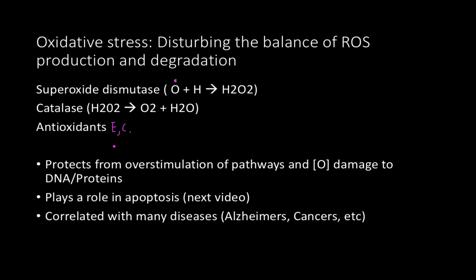The importance of antioxidant defense is twofold: it protects us from over-stimulation of pathways and the oxidative damage that comes with it, because reactive oxygen species will indiscriminately damage DNA and proteins. This also plays a large role in understanding the signaling cascade for apoptosis, and is correlated with many modern first-world diseases including autoimmune diseases, inflammatory diseases, Alzheimer's, cancers, and other conditions we'll discuss later.